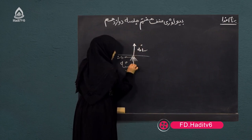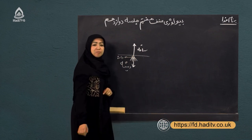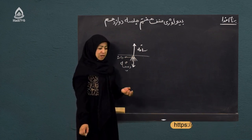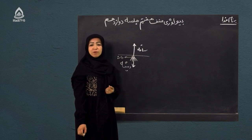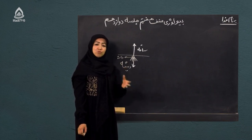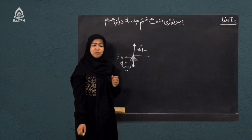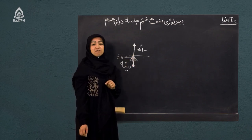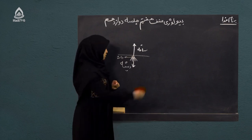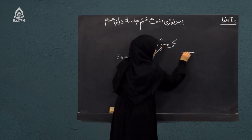ساقه بخش جدیدی است در نبات که بعد از ریشه نمو پیدا میکند، اما جهت رویش ساقه و ریشه عکس یکدیگر است. ساقه به سمت بالا رویش میکند و ریشه به سمت پایین. یک مطلب جالب: رویش ساقه در نباتات تک‌مشیمه و دومشیمه با یکدیگر متفاوت است. اگر این نبات تک‌مشیمه باشد، ساقه به صورت مستقیم و میله‌مانند رشد میکند.